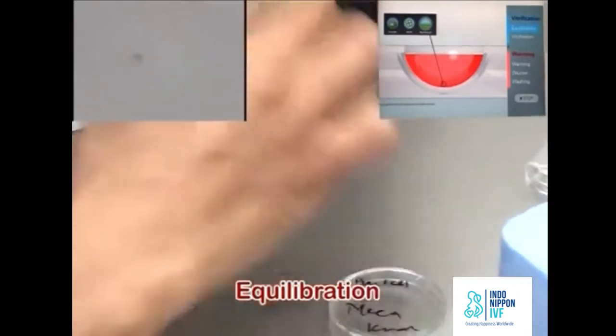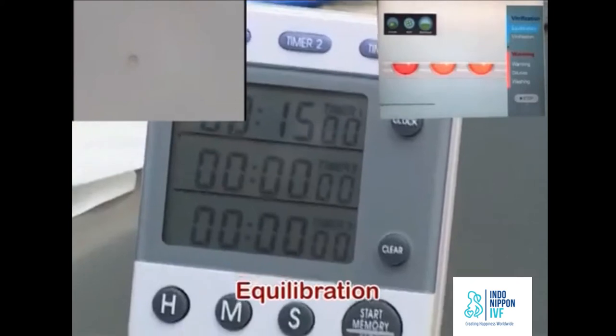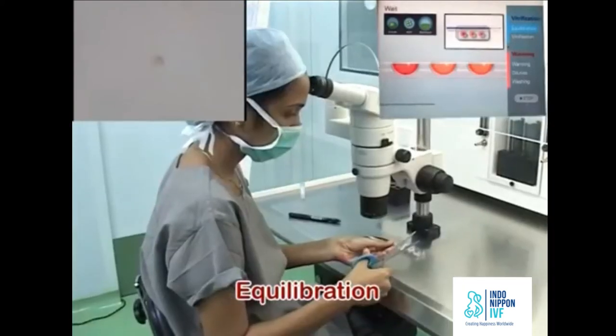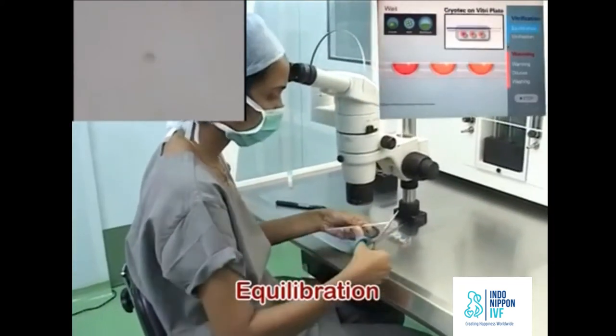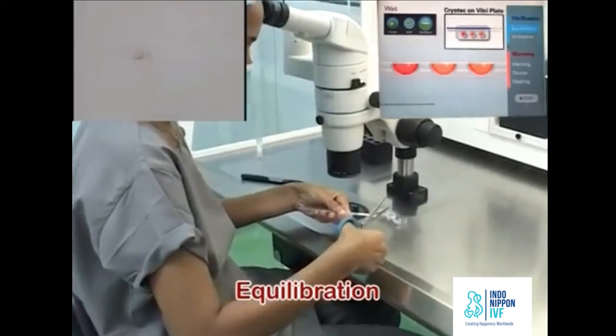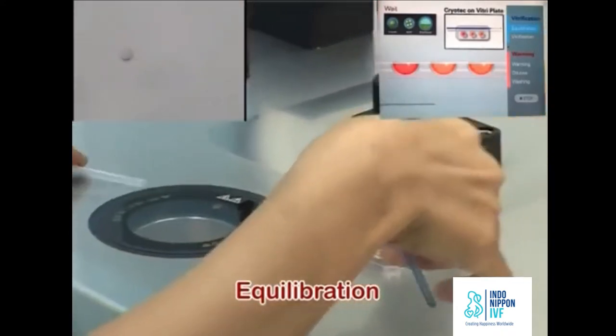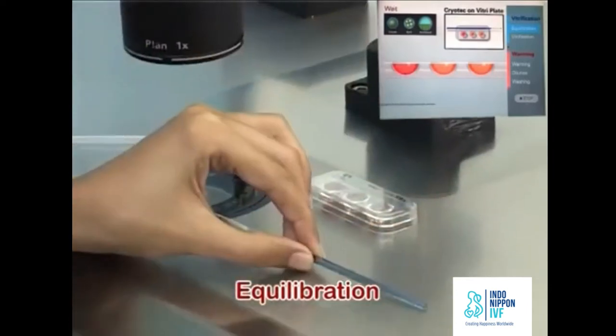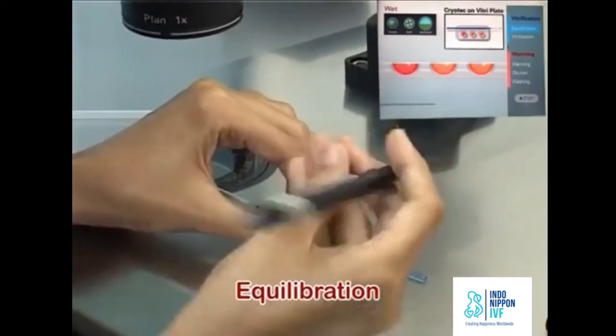When the oocyte volume is completely recovered, it is the end of this step. Oocyte equilibration is complete when the width of the perivitelline space becomes equal to the width before immersing into ES. If you can't confirm the complete recovery, the time limit for this step is 15 minutes.